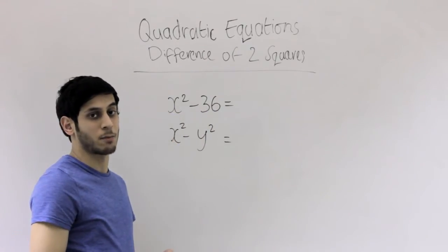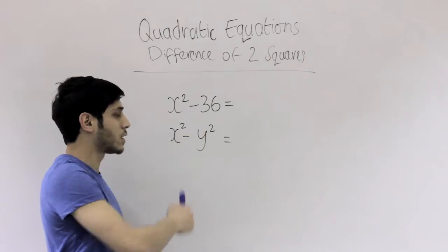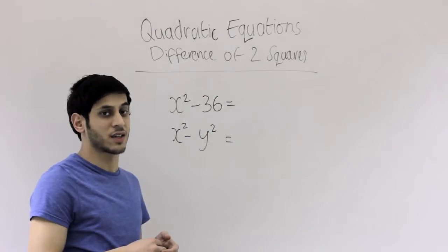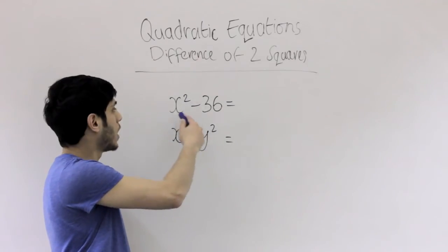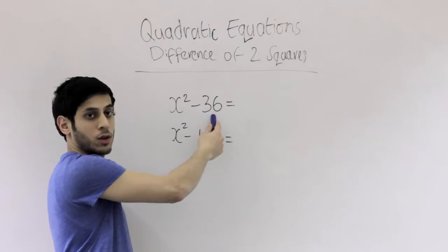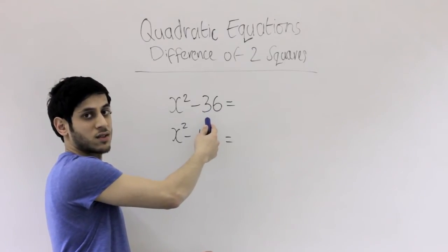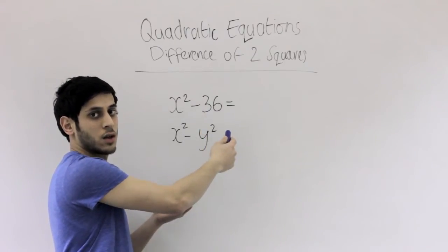They both need to be separated by a negative sign. There's two negative signs there. And the last condition is they both need to be perfect squares. So you can see that they're both squared here and you can see that they're both squared here. You can tell that this is a square because 6 times 6 equals 36. We just did the squared part already.